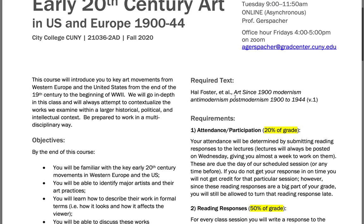Your required text is Art Since 1900 — make sure you're getting volume one, which is 1900 to 1944. I will share the first reading; I think I have scans of the second readings too, so email me if you need those while you're waiting for your book. It's by Hal Foster and three other authors. There are now three editions; any edition will do. I've set up this class so that the readings will all overlap even if you have the first edition, which you can maybe find as a PDF or an inexpensive used copy.